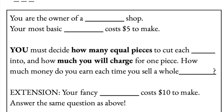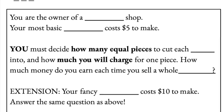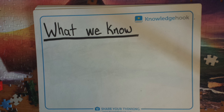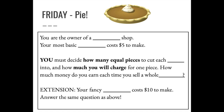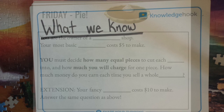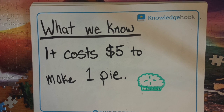A good place to start with any problem is to ask yourself: what do I already know, or what information does the question already give me? That's going to be key in finding the information we don't know at the end of the problem. From reading the problem, think about what information you already have. Read the question once more carefully and see if you can find the one really important piece of information. Feel free to pause the video if you need to. We know for sure that it costs $5 to make one pie.